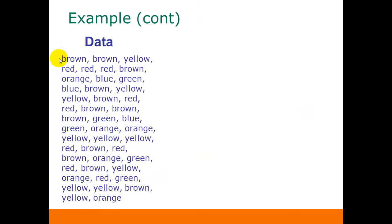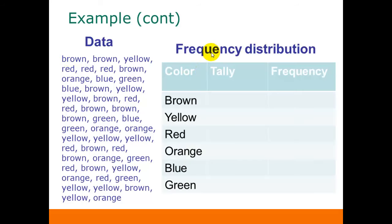So here's our data again. To construct our frequency distribution, we're basically just going to make a table that lists all the categories for the data — in this case the different colors. Then we're just going to go through this list of data and put a tally mark in each category as we go through the list. When we're done with that, we'll count up the frequencies for each color — in other words, how many M&Ms of that color were in the bag.